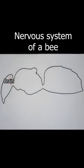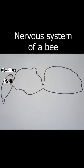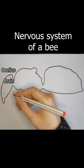These have a brain, an ocellus which is used to detect light intensity during dawn and dusk specifically, where the facet eyes provide more visual information to the brain.